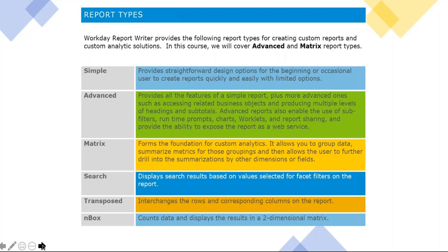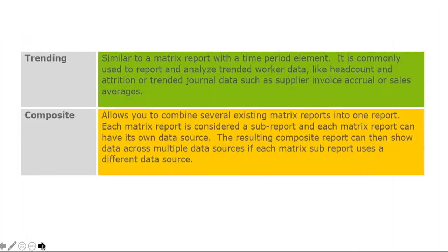nBox is a report type not many organizations use — only those heavily invested in performance calibration and talent calibration use it. Trending report is a very interactive report and comes in very handy in finance. When you summarize data based on a time period — fiscal period, current year-to-date, year-on-year, or month-by-month — that's when the trending report comes into picture.